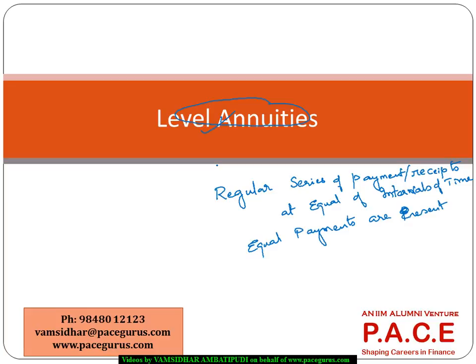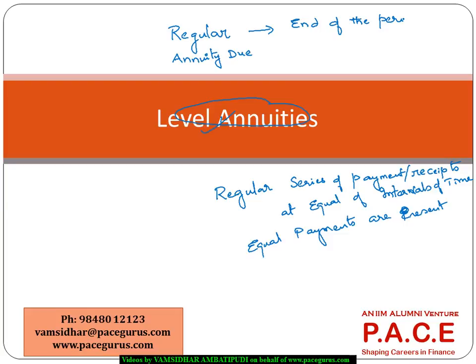Those are called level annuities, and within level annuities we can talk about regular annuity versus annuity due. Regular annuities are where the payments are made at the end of the period — the period could be a year, month, or whatever. Annuity due is where payments are made at the beginning of the period. Both are level annuities, differing only in the timing of payments.